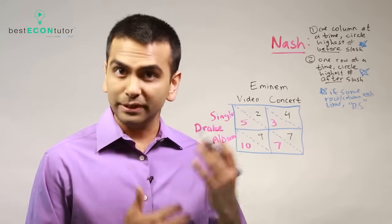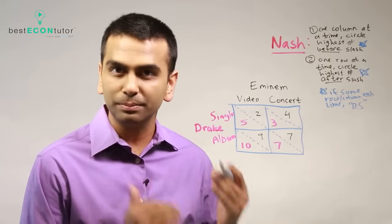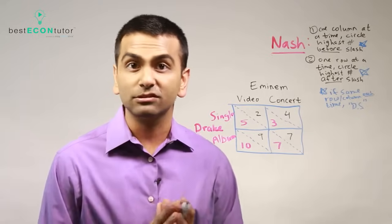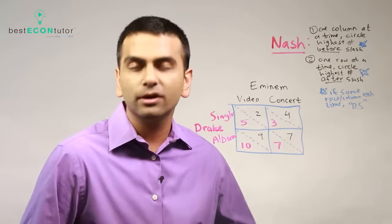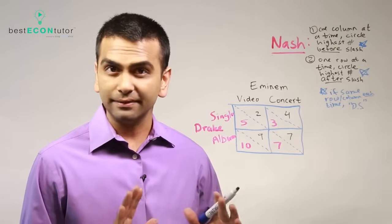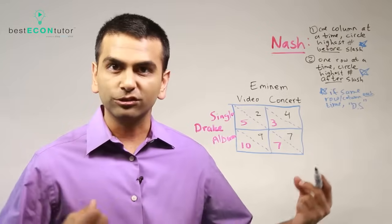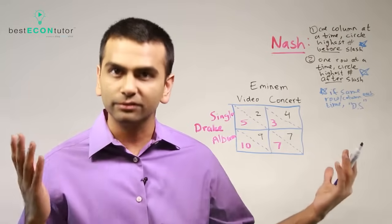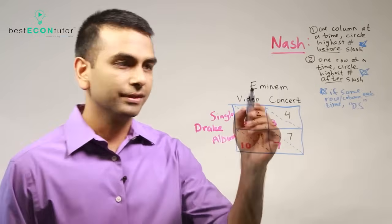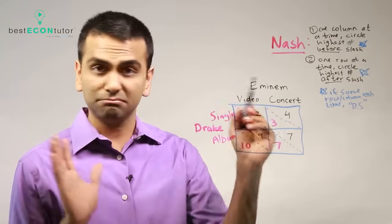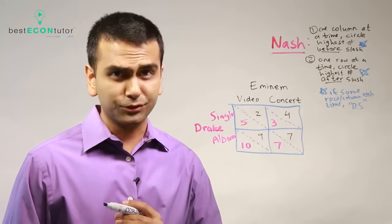Before that, let's talk about what this thing even means. The games we assume for microeconomics here are what are called simultaneous games - so you play them together. Unlike a game of chess where one person goes and then the other person goes, this is more like rock-paper-scissors where both players are going simultaneously and the outcome is based on what they both do. So here the two players of the game - let's say Eminem and Drake.